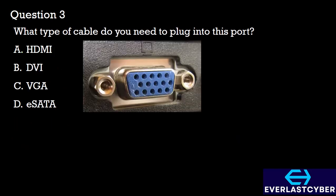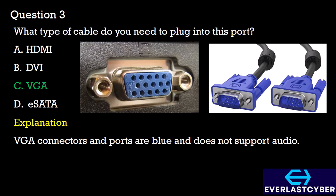Question 3: What type of cable do you need to plug into these ports? A. HDMI, B. DVI, C. VGA, D. eSATA. The answer is Option C, VGA. VGA connectors and ports are usually blue and they don't support audio. They have 15 pins arranged in 3 rows of 5 pins each, and they carry only analog signals. On the right is a diagram of what the cable looks like, while on the left is the port where the cable plugs into.